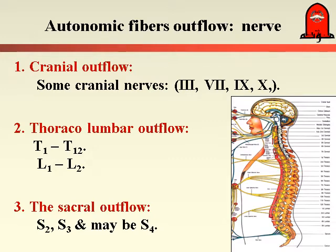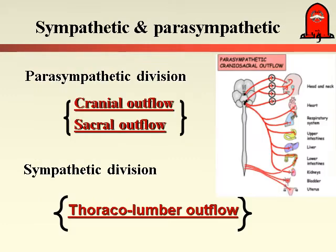The third outflow is the Sacral Outflow, which includes the upper three segments of the sacral part of the spinal cord: S2, S3, and possibly S4. Looking at the function of these outflows: the cranial outflow and sacral outflow have a similar function, regarded as the parasympathetic division of the autonomic nervous system. On the other hand, the sympathetic division is represented by the thoracolumbar outflow.